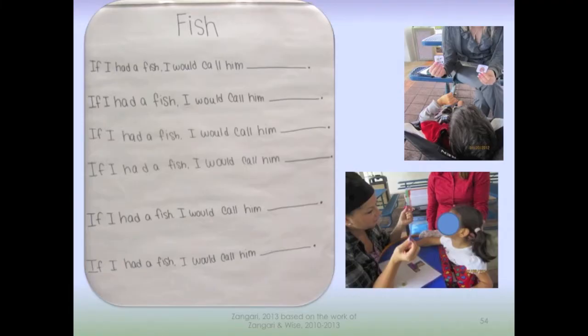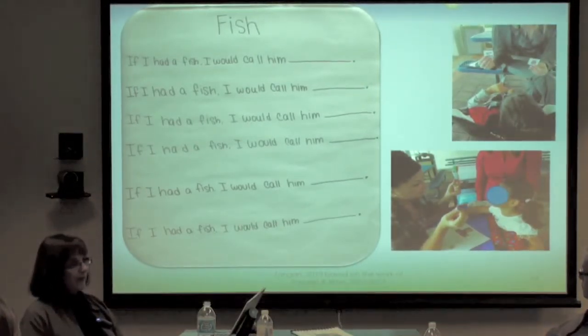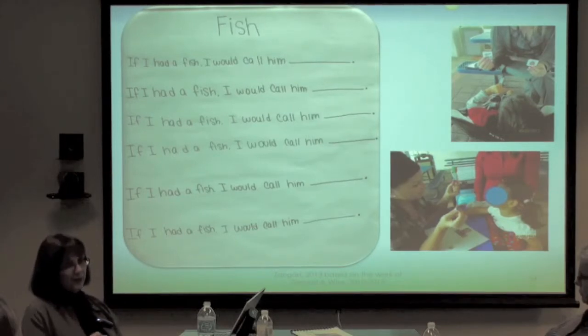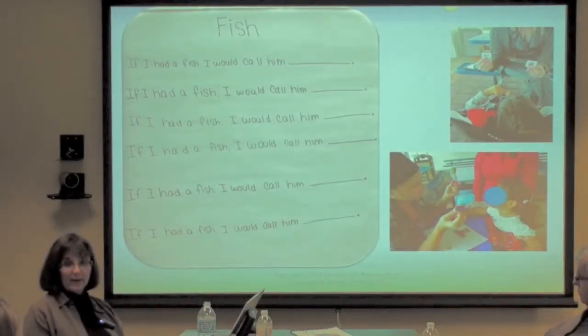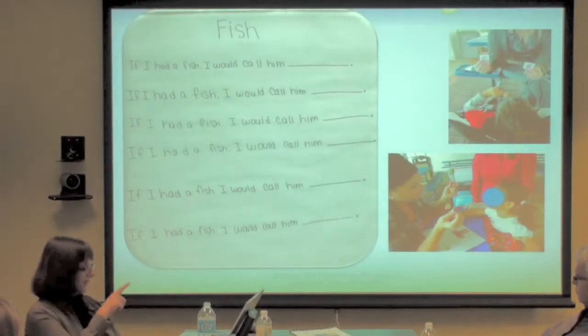Here's one example of a predictable chart where they were naming the fish. The teacher was really focusing on things related to the special letter that went along with that book. As they were going through the process, she was modeling the core vocabulary and eliciting it even if their particular response didn't have a core word. So they were using the core vocabulary through the process of the activity whether or not that's what got dictated.